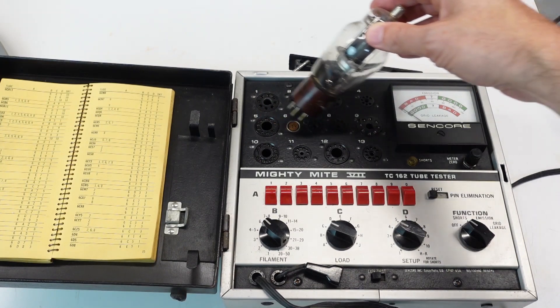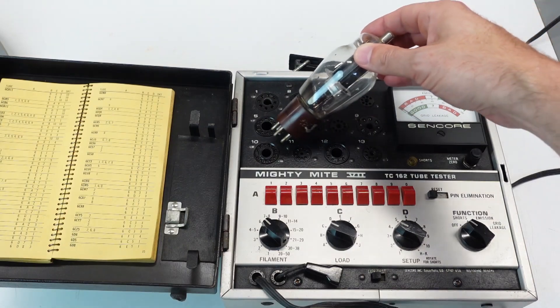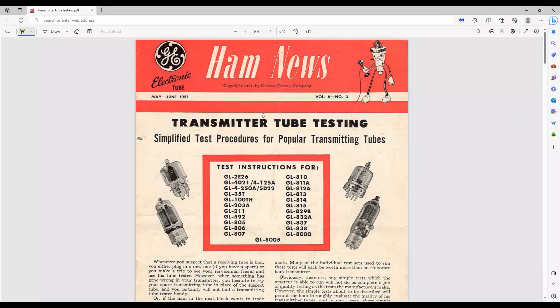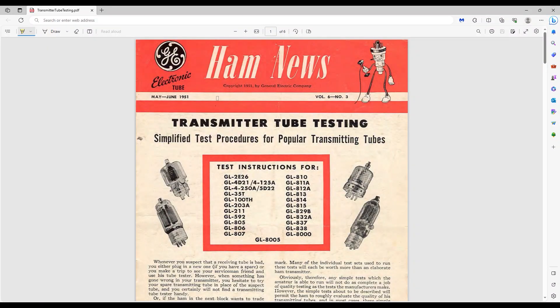And that idea comes from General Electric, one of the largest former manufacturers of the 807. A quick web search turned up this May-June 1951 edition of Ham News that contains three basic performance tests that one can perform on transmitter tubes of that era, including the 807. But before I get into the details, I want to spend a few moments talking about the Ham News publication itself.